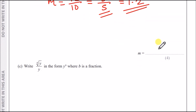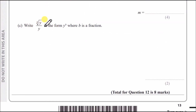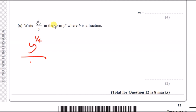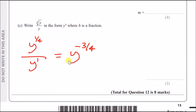Final question: write the fourth root of y divided by y in the form y^b. The fourth root of y is y^(1/4). Dividing by y (which is y¹) means subtracting powers: 1/4 − 1 = −3/4. So the answer is y^(−3/4).